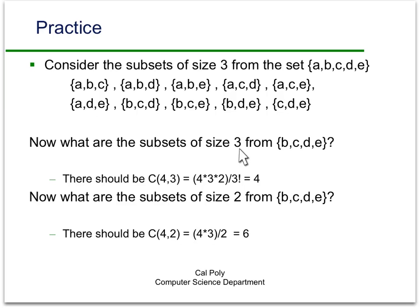Now there should be, what do we want? We want size 3 from four elements, so that's going to be C(4,3). And if you calculate that out, that's going to be 4. So you should be able to find four subsets of size 3 from there. Then what are the subsets of size 2 from {b, c, d, e}? You should be able to write those down, and there should be six of them. Now take these elements of size 2 that we got from here, add a to each one of those subsets, and then convince yourself that the four sets we got from here, and the six sets we got down here with an a added to them, give you the 10 sets that we have up here.